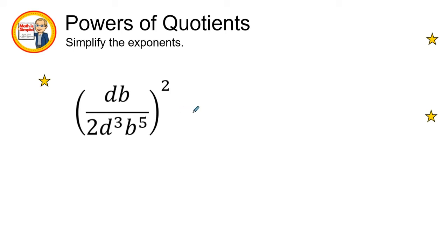I can distribute it out or I can duplicate everything inside the parentheses twice — we're going to distribute this time. We look at this d and it's raised to the first power; if we do not see an exponent we know it's raised to the first power. So when we multiply our outside number to the inside variable or coefficient, we're going to multiply it by 1. This coefficient down below is also raised to the first power. Let's distribute this 2 to each one of the terms.